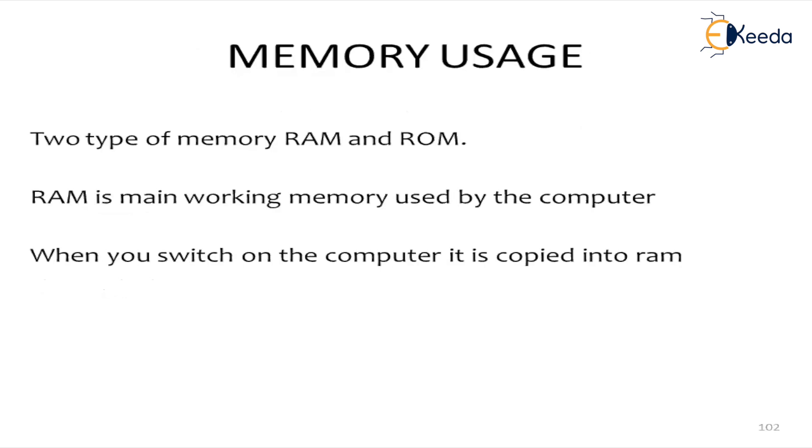The main concern is what is the memory usage of an ALU. The ALU system shows the data in the form of two types of memory. One is called RAM, the other one is called ROM. RAM is main working memory used by the computer. When you switch on the computer, the contents are copied into the RAM, which is your random access memory.